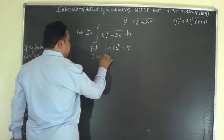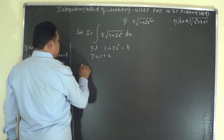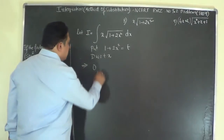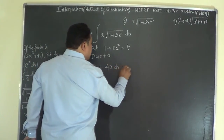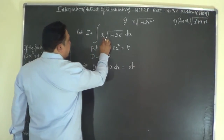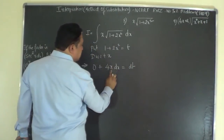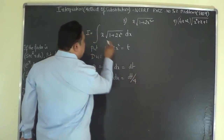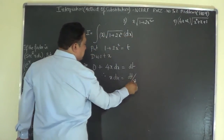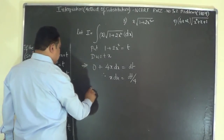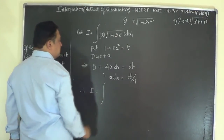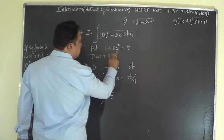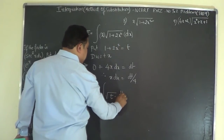Differentiating with respect to x: the differential coefficient of 1 is 0, and of 2x² is 4x, so 4x dx equals dt. We only need x dx, so x dx equals dt/4. Therefore I becomes the integral of root of (1+2x²) — which is root t — times x dx, which is dt/4.